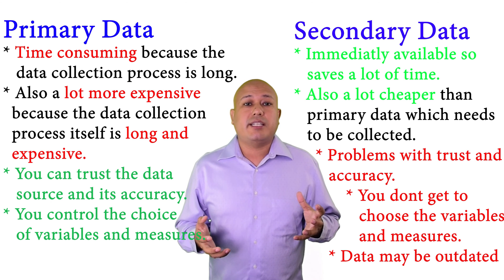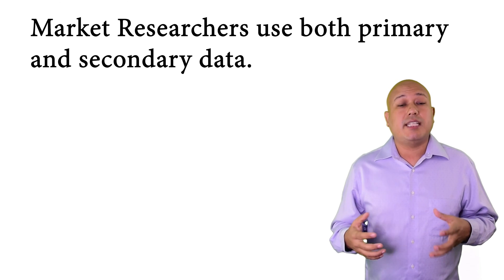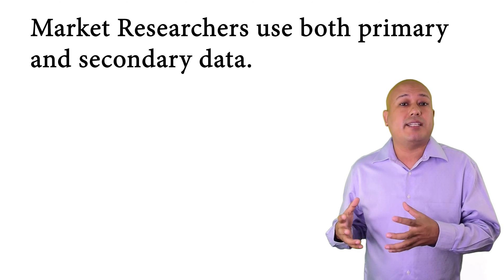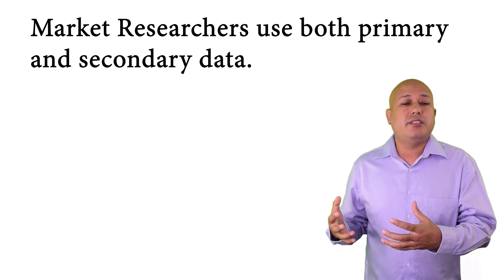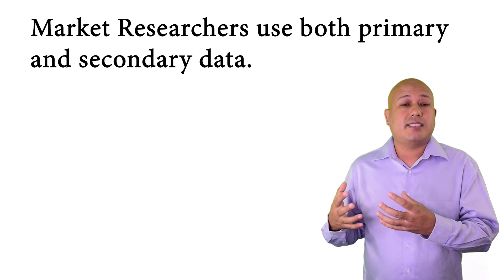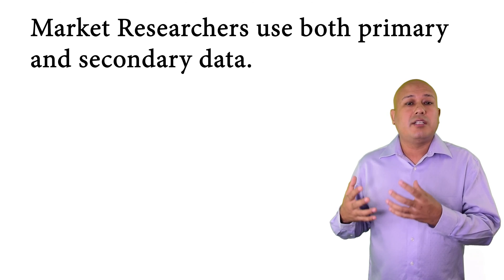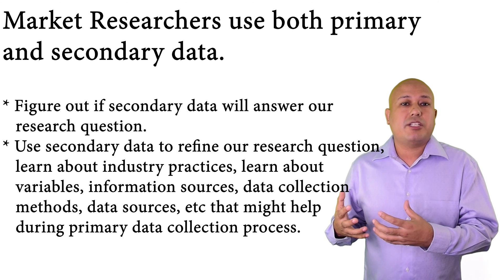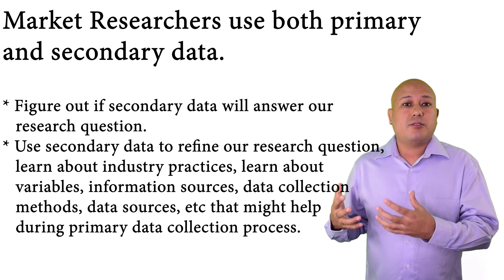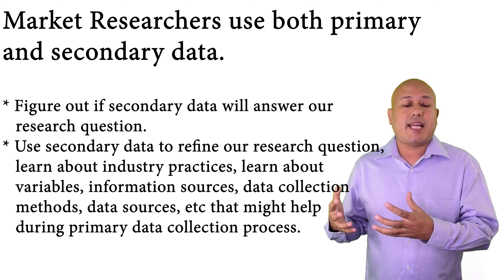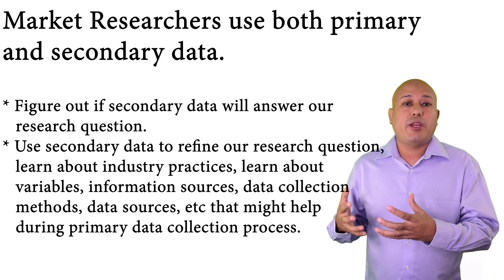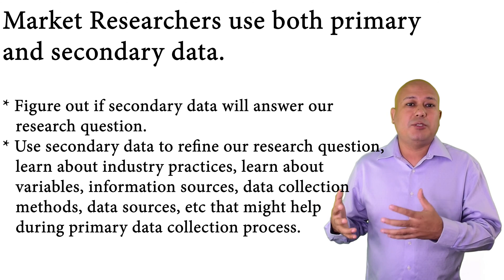There are both positives and negatives associated with primary and secondary data. Generally, how marketing research works is that researchers will use both, and they will typically use secondary data first — digging through all available secondary data to find relevant information or to see if their question has already been answered.